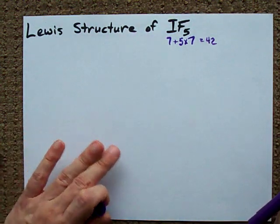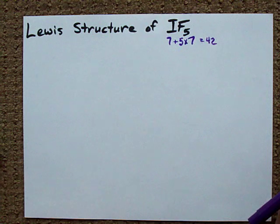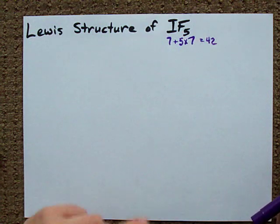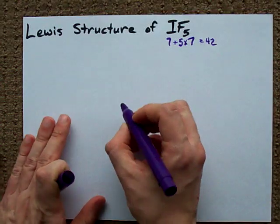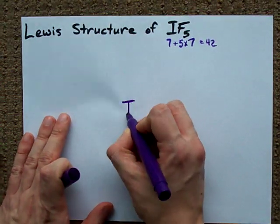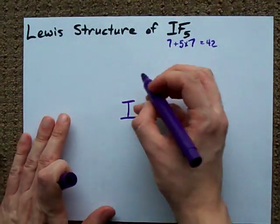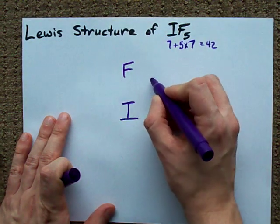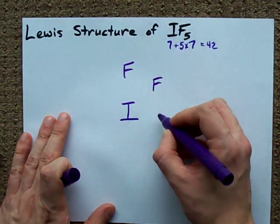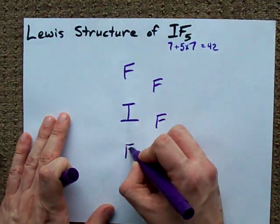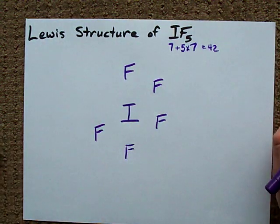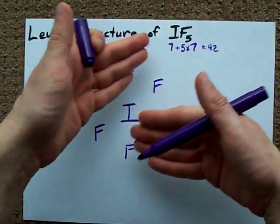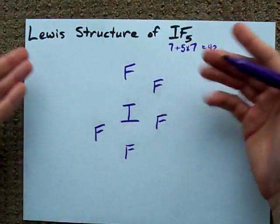So I'm going to have to put 42 electrons in my diagram. First things first, draw your central atom and the other atoms around it. The least electronegative atom here is I, and I need 5 fluorines around it. Now I didn't space these equally because I kind of know what it's going to look like. No harm, no foul if you drew them symmetrically around the I.